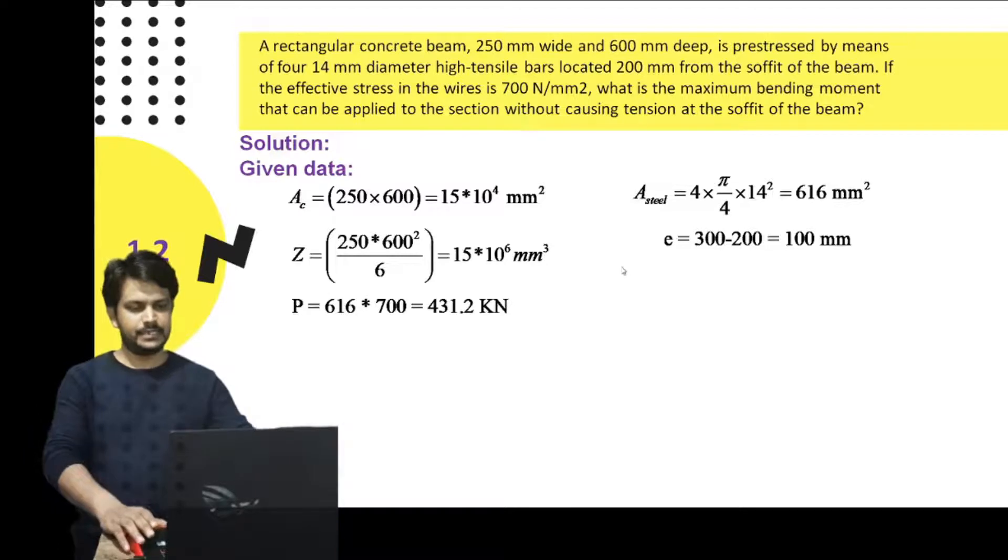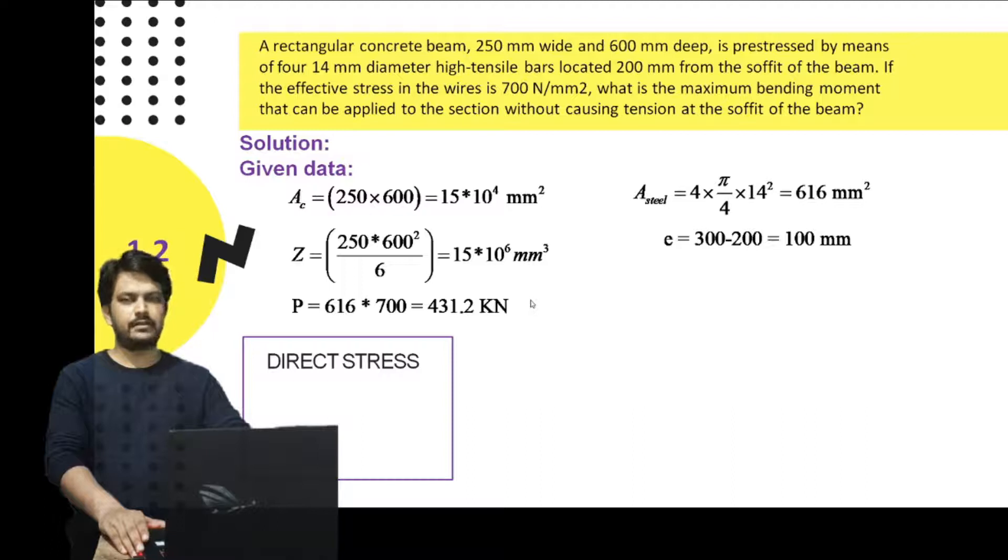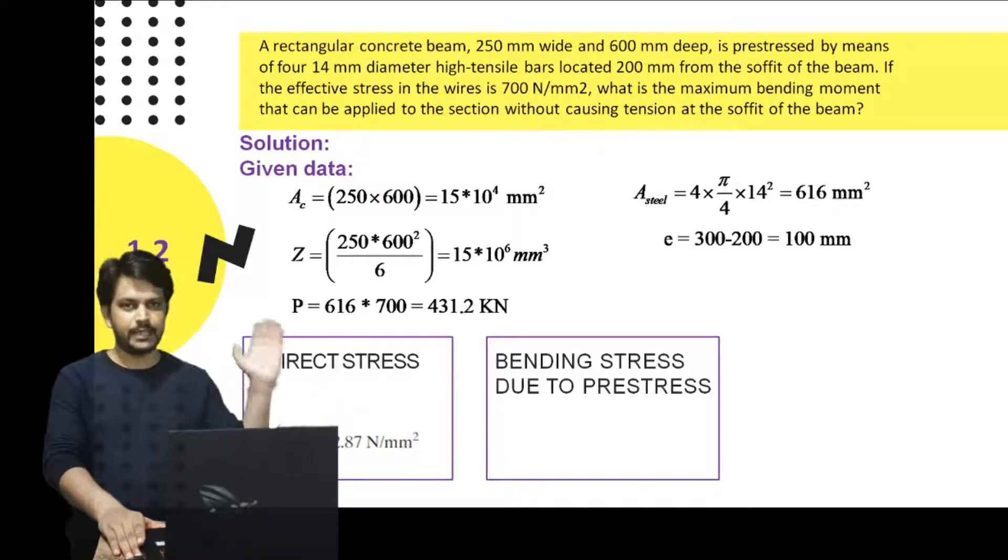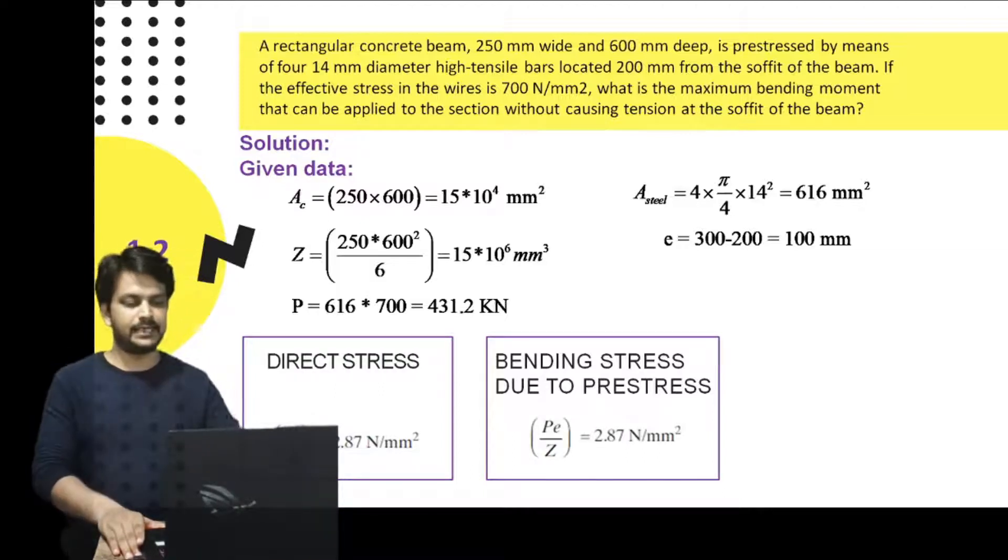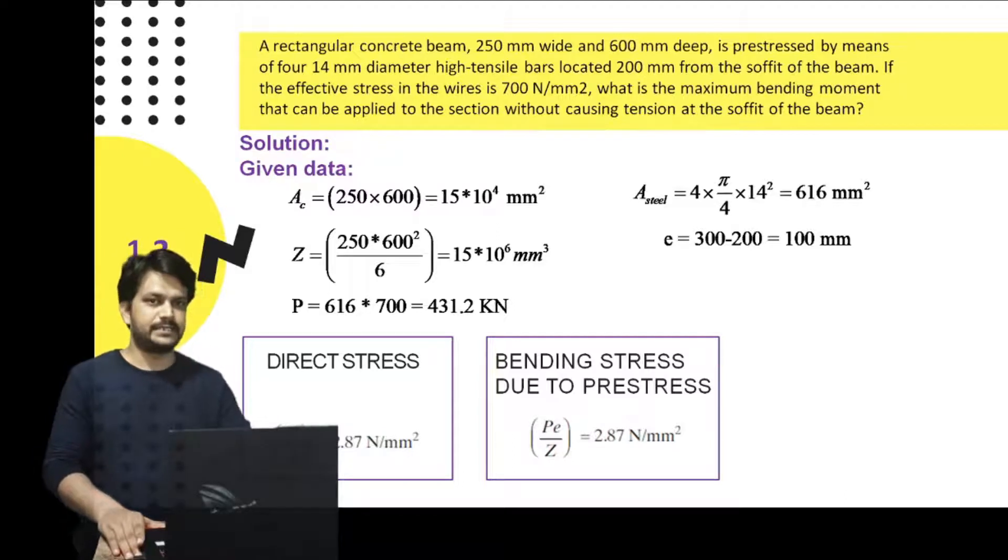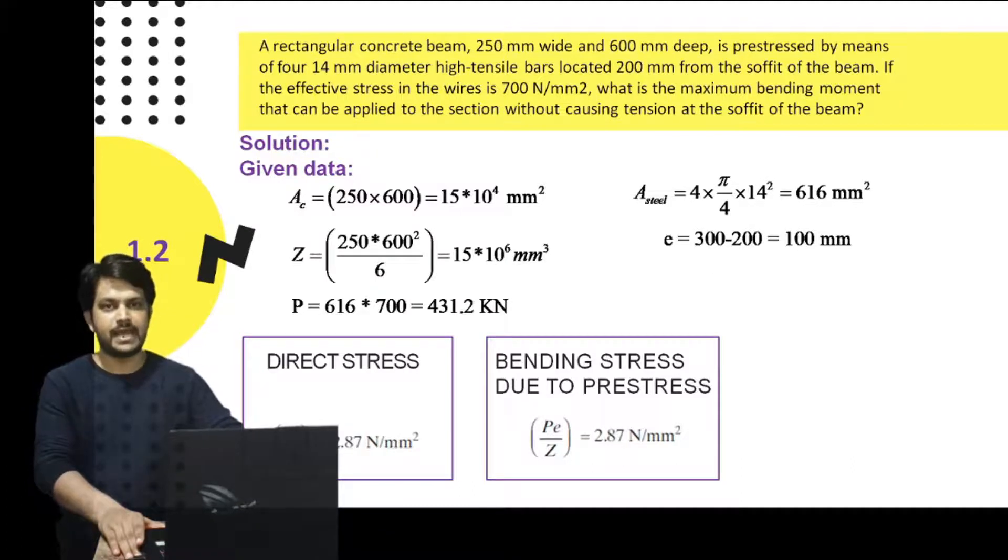Therefore, the direct stress induced will be P by A, which is found to be 2.87 MPa, and it will be positive because these stresses are compressive in nature. Due to the eccentricity of 100, the bending stress induced due to prestressing would be Pe by Z, which is 2.87 MPa, minus plus, because the moment induced due to the eccentricity of the prestressing force will be of a hogging nature. So these stresses are tensile at top and compressive at bottom.